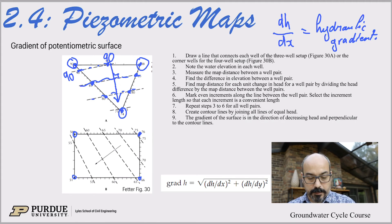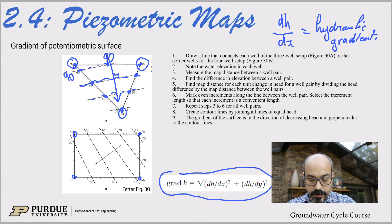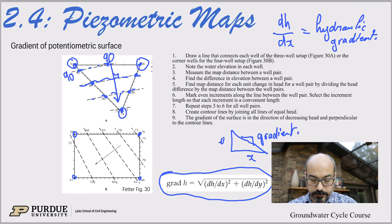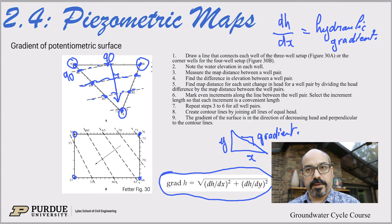You can follow those steps and draw these lines to find the gradient. Note that in 2D, the gradient magnitude is computed using the Pythagorean theorem — the square root of (dH/dx)² + (dH/dy)².